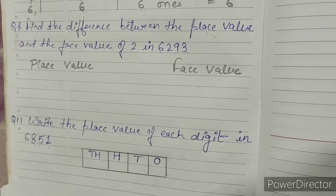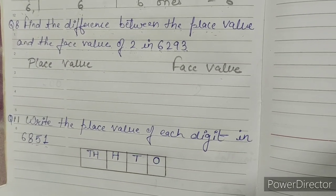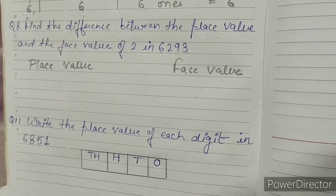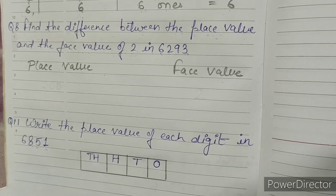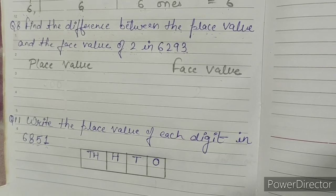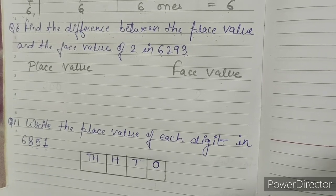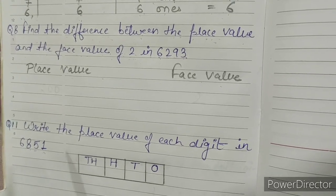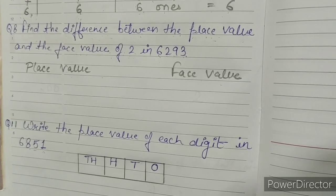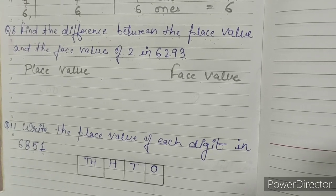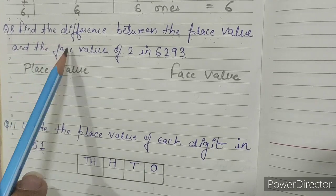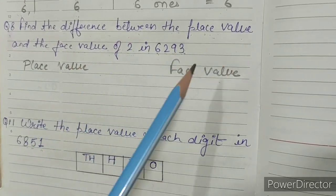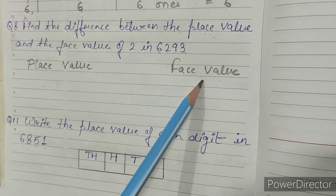Question No. 8: Find the difference between the place value and the face value of 2 in 6293. Let's find out the difference between the place value and the face value.